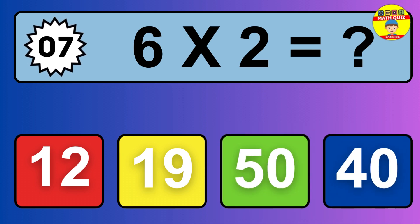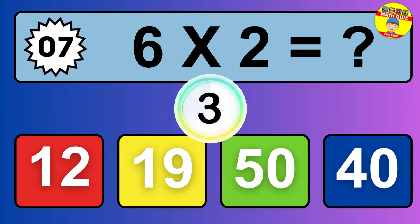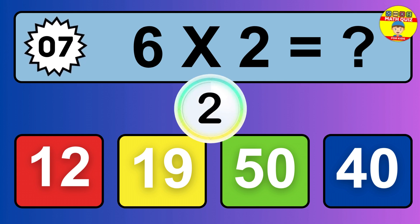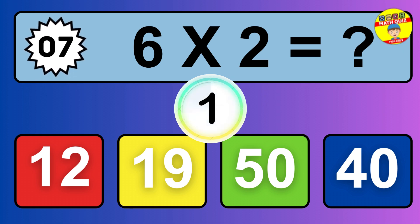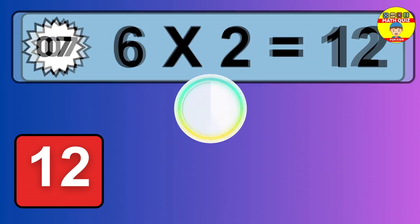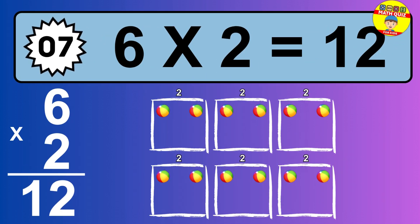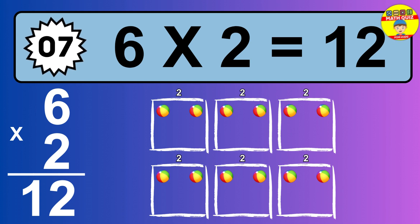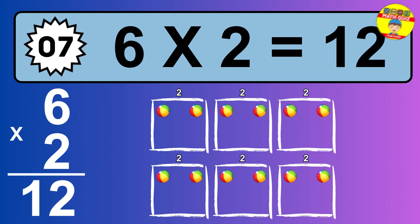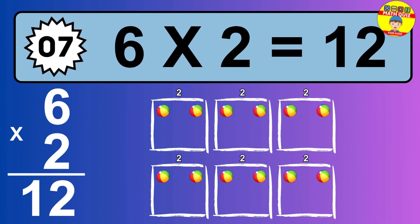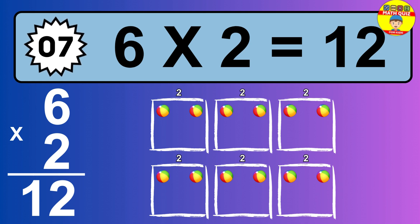Question 7. 6 times 2 equals what? The answer is 6 times 2 is 12. To calculate, we have 6 groups with 2 balls each one. So how many balls do we have? 12 balls.